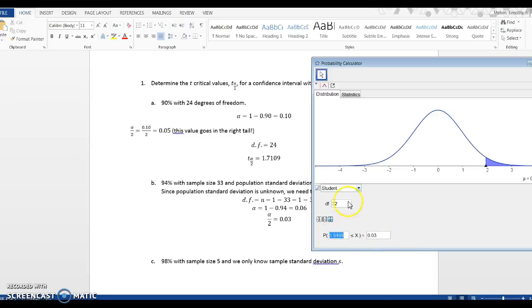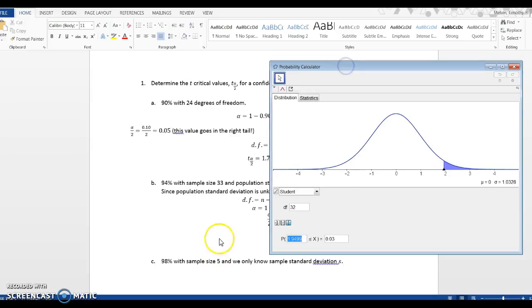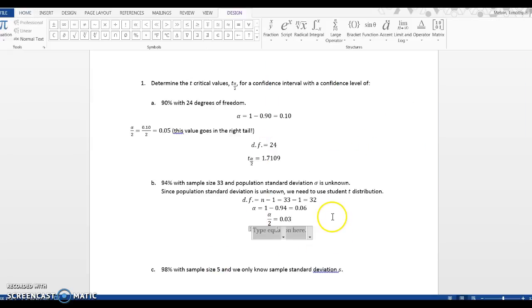I get 1.9499 right here. This is my critical value, so T subscript alpha over 2 is going to equal 1.9499.